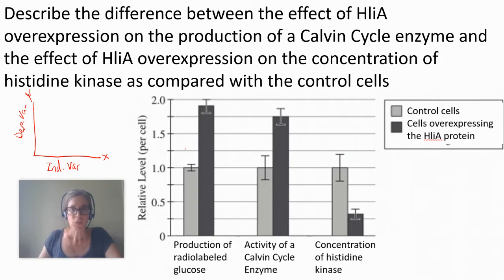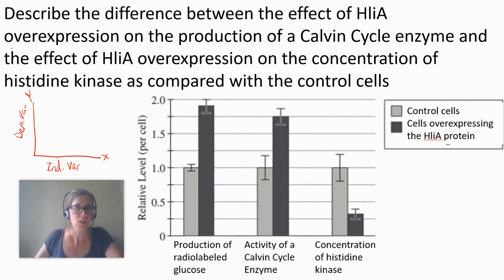This experiment shows something different. Let's read through the question: 'Describe the difference between the effect of HLiA overexpression...' — what does overexpression even mean? I haven't taught you the DNA unit yet, but you know how DNA makes RNA, which makes proteins. So if you're making too much of a certain protein, we say the gene is overexpressed.